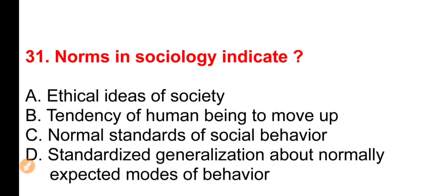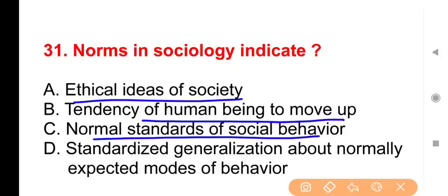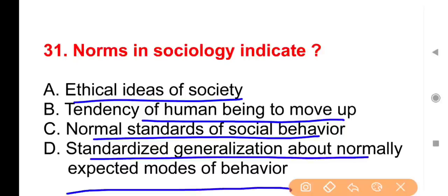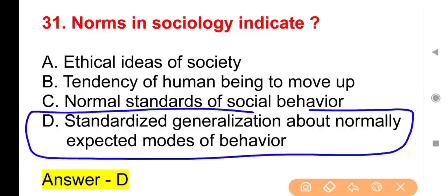Question 31: Norms in sociology indicate — Option A, Ethical ideas of society; Option B, Tendency of human beings to move up; Option C, Normal standards of social behavior; Option D, Standardized generalization about normally expected modes of behavior. The right answer is Option D.